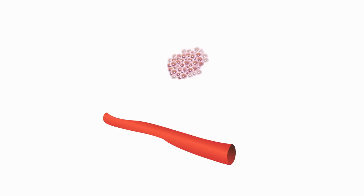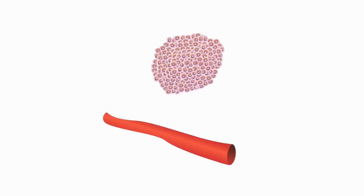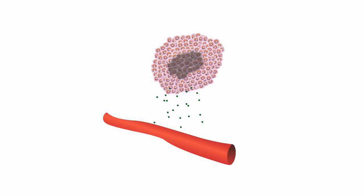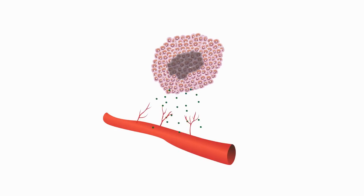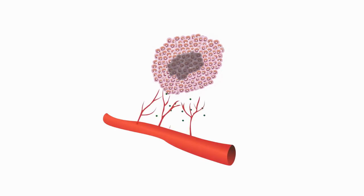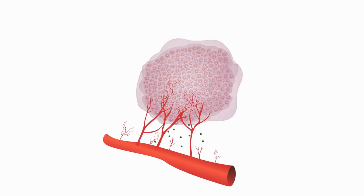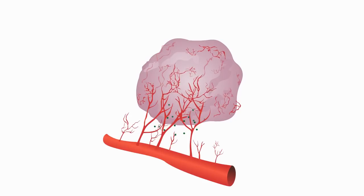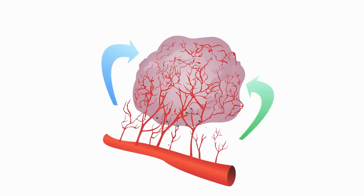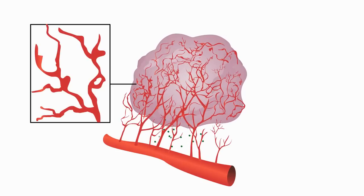How does it work? Cells in the center of the tumor mass have to compete with their neighboring cells for access to oxygen and nutrients. When they begin to starve, they release growth factors as a distress signal to the surrounding tissue. Nearby blood vessels receive these signals and begin to grow new vessels toward the source. As long as the signal continues, the vessels will continue to grow in its direction. Vessels that grow into the tumor nourish the tumor tissue, delivering oxygen and essential nutrients, but are structurally abnormal.